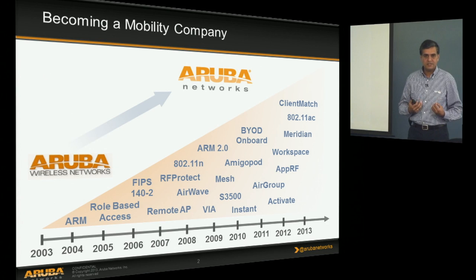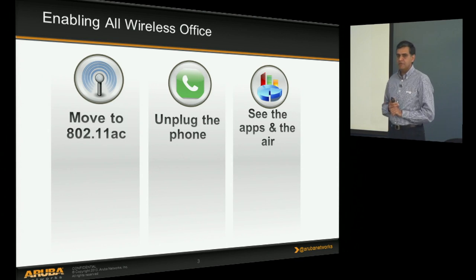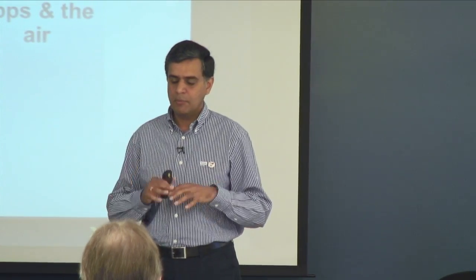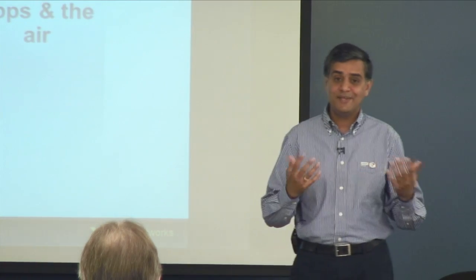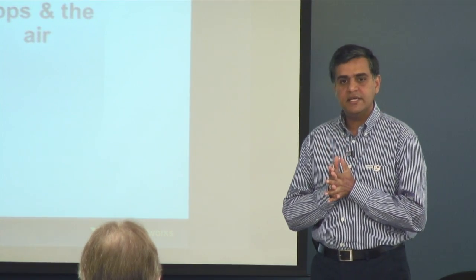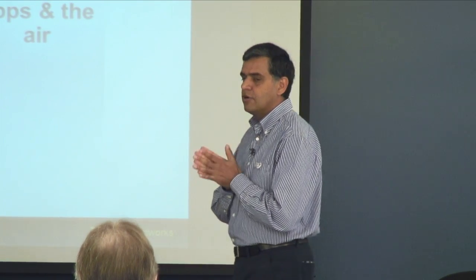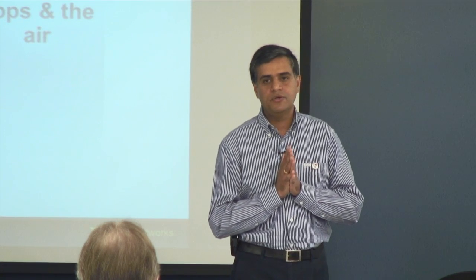Today, with the advent of 11AC, is about enabling the all-wireless office. Until now we've hemmed and hawed about whether we can really go all-wireless. Starting with AC, we are confident in our ability to deliver on that vision of not having to pull cable anymore. This boils down to three things: first, enabling very reliable, very high-performance Wi-Fi — AC is the technology, but software around it enables reliable performance.